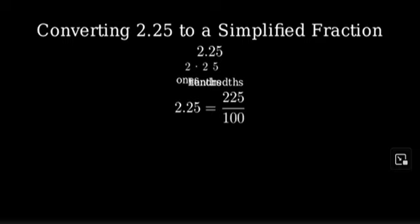We get this because 2.25 is the same as 2 and 25 hundredths. Now, let's convert this to a mixed number. We can write it as 2 plus 25 over 100.